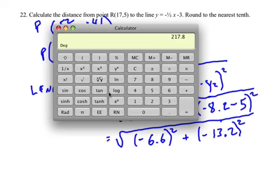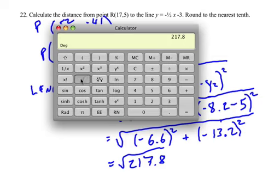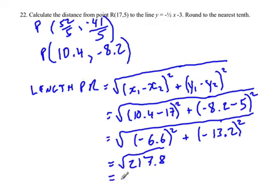It's going to be 217.8, so that's the square root of 217.8. Then we take the square root of that, which is approximately... if we round to one decimal place, nearest tenth, it's 14.8. So it's approximately 14.8 units. Alright, that's it.